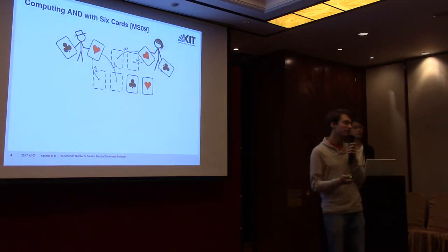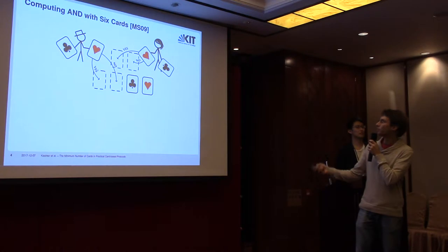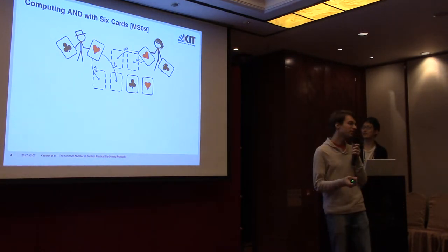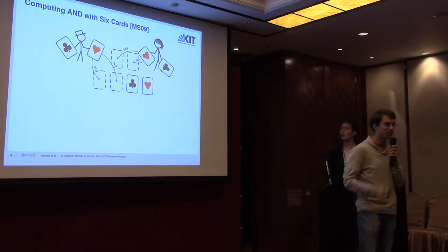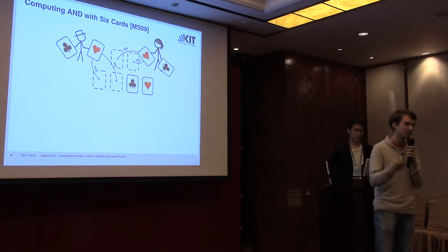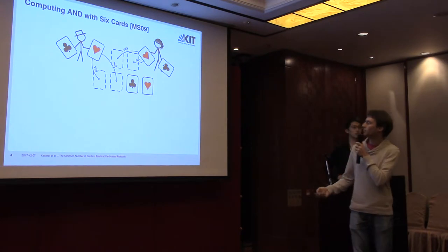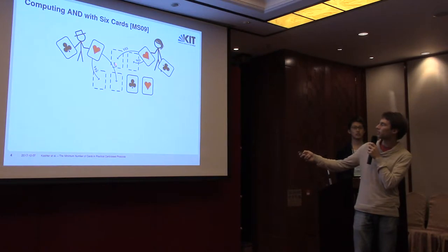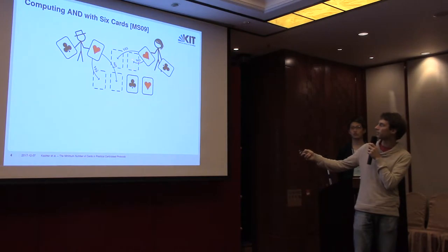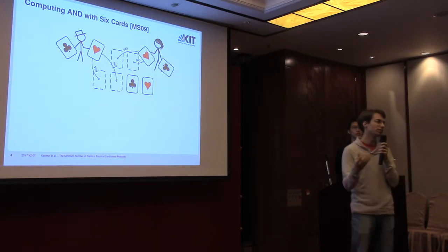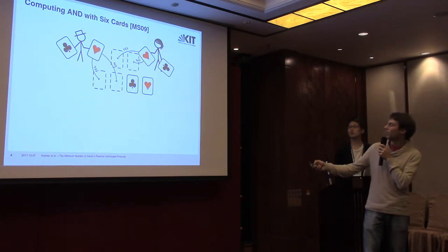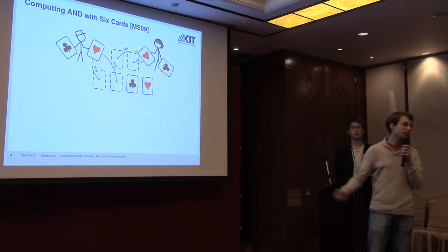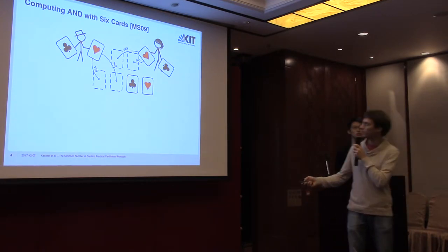This protocol is by Mizuki and Sonoda from 2009. We can compute an AND — which is like private set intersection for one movie — with playing cards. Alice places a heart card to the left if she says yes, or a club card on the other side if she says no. Bob does the same. We have a club and heart encoding a zero at the remaining position as helping cards.